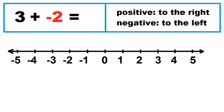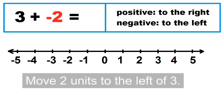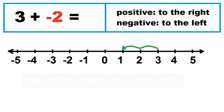Another example: 3 plus negative 2. Move 2 units to the left of 3 — 1, 2. 3 plus negative 2 equals 1.